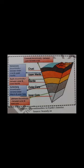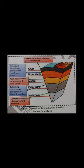Discontinuities in the earth's interior: Conrad discontinuity lies between the upper and the lower crust. Mohorovičić discontinuity lies between the lower crust and the upper mantle. Repetti discontinuity lies between the upper and lower mantle. Gutenberg discontinuity lies between the mantle and the outer core. Lehmann discontinuity lies between the outer and inner core.